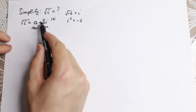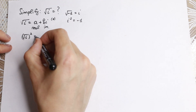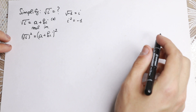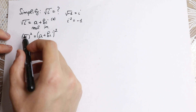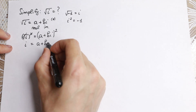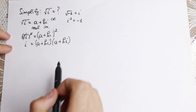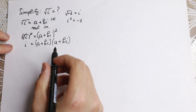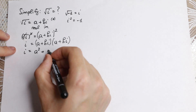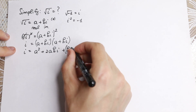Now let's raise both sides to the second power. We'll square both elements: (√i)² = (a + bi)². On the left side, the square root and the square cancel, leaving us with i. On the right side, we expand (a + bi)(a + bi), which gives us a² + 2abi + b²i².